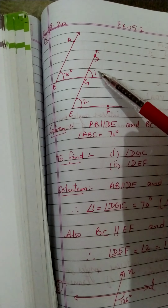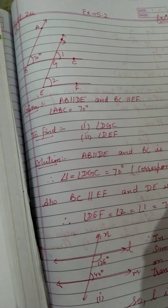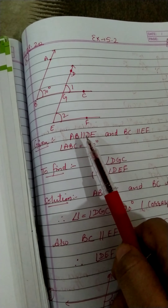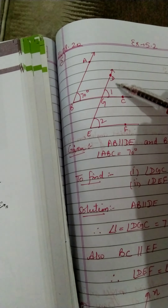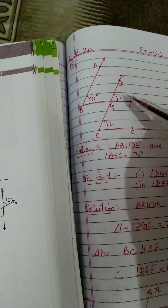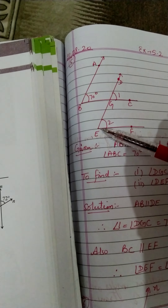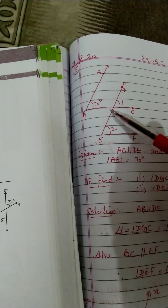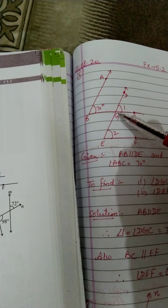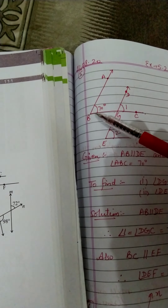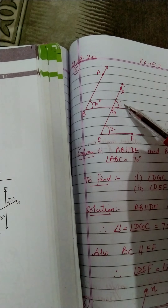DGC हमें find out करना है, यानि angle one find out करना है। अब देखो — AB parallel to DE है, तो BC इसकी transversal line है जो इन्हें two or more points पर cut कर रही है। तो अगर angle ABC 70 degree है, तो DGC यानि angle one भी 70 degree होगा — corresponding angles की property के according।